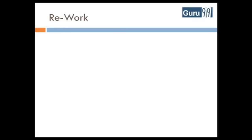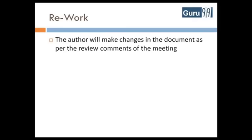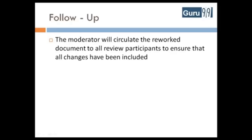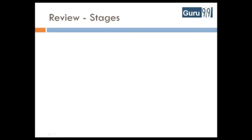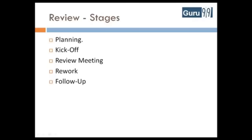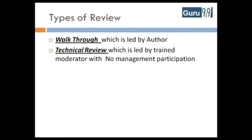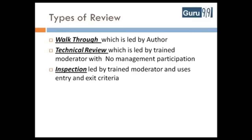The rework phase follows, where the author makes changes in the document as per the action items of the meeting. In the follow-up phase, the moderator circulates the rework document to all review participants to ensure all changes have been included satisfactorily. There are three types of reviews: walk-through, which is led by the author; technical review, which is led by a trained moderator with no management participation; and inspection, which is led by a trained moderator and uses entry and exit criteria. All three types follow the same review process and stages.